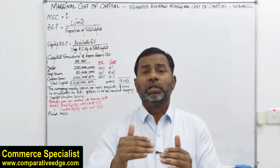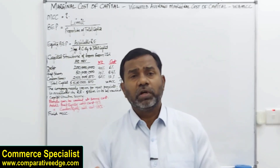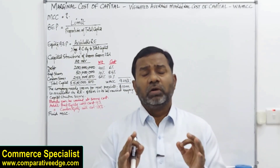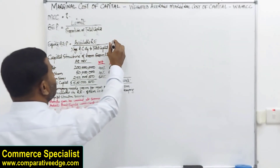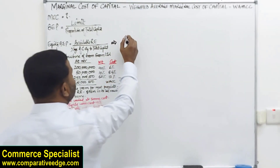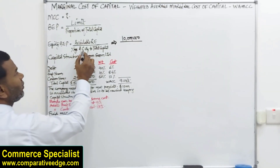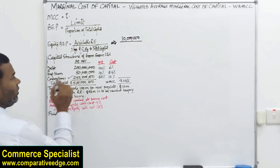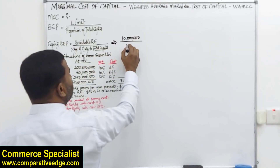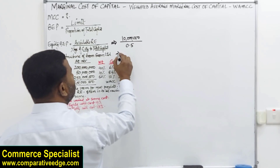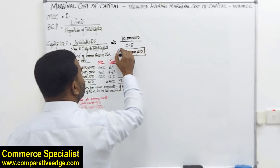The first step is to find the equity break-even point using the formula. Plugging in the numbers: available retained earnings per the question is 10 million, and the percentage of common equity to total capital is 250 million divided by 500 million, which is 50%. So we divide 10 million by 0.5, which gives us 20 million. Our equity break-even point is 20 million.